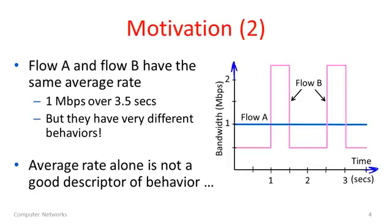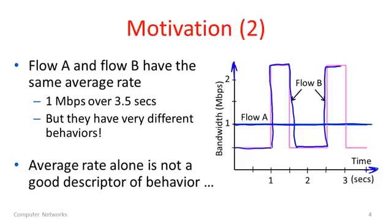Flow A is a smooth flow — it sends steadily at a rate of one megabit per second over a period of three and a half seconds. Flow B on the other hand sends at a low rate and then occasionally shoots up to a high rate, back down, and then occasionally shoots up again.